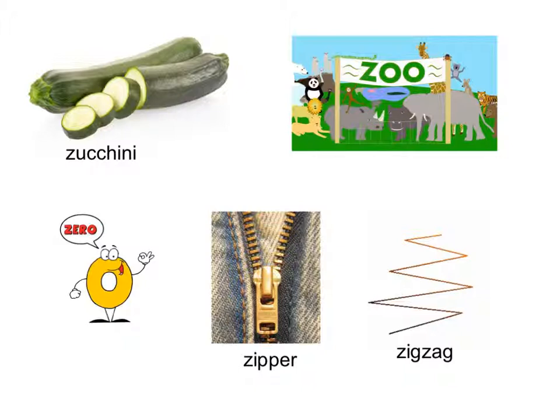What do you see? Zoo. Say zoo. Zoo. Zoo starts with 'z'. What do you see? Zucchini. Zucchini, one of my favorite vegetables. Zigzag. And zigzag starts with 'z'.